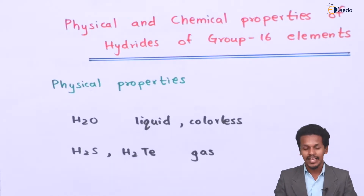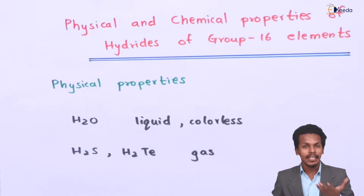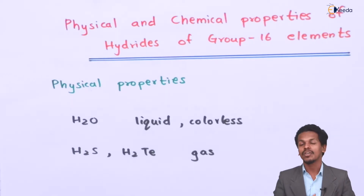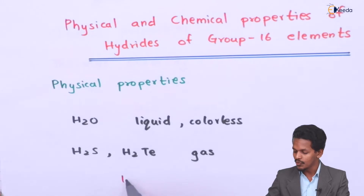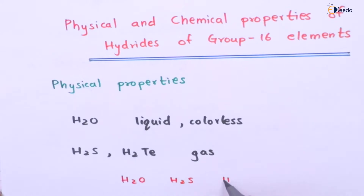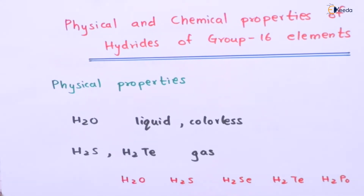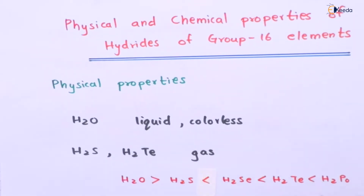Now let me talk about more information related to this. If we talk about water, the boiling point of water is 373 Kelvin. But if we talk about the hydrate of sulfur, H2S, its boiling point is less than 373 Kelvin. Comparing in order: H2O, H2S, H2Se, H2Te, and H2Po — H2O has the highest boiling point. H2S has a lesser boiling point than H2O but a higher boiling point than H2Se. This was related to the physical properties of the hydrates of group 16 elements.